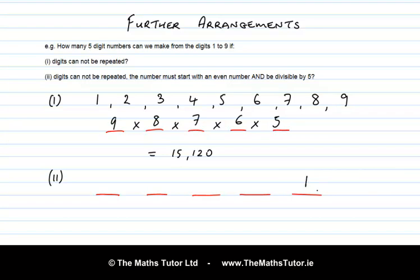Also, the number must start with an even number. How many of our digits are even? Well, 2, 4, 6 and 8 — that's 4 digits — so we have 4 choices for the first slot. After that, the only restriction is that digits cannot be repeated. We started with 9 digits and have used up 2, so we have 7 choices for the next slot, then 6, then 5. Multiplying: 4 × 7 × 6 × 5 × 1 = 840 different arrangements.